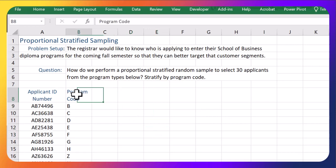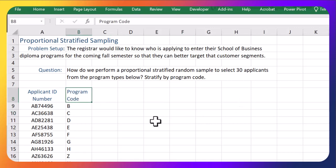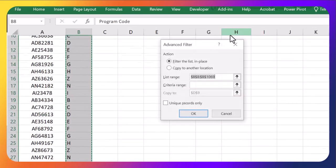I'm going to use a fun technique here under the Data tab and Advanced Filters. I'm going to highlight all the program codes here. I'm going to click on the top and hit Control-Shift-Down. Now in the Data tab, I'm going to go to Advanced Filters.